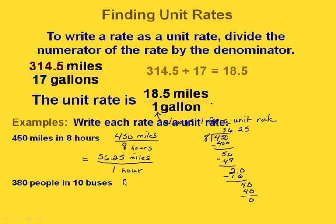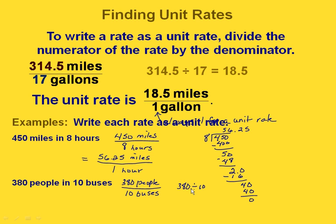For 380 people in 10 buses, we divide 380 by 10. Using the rule for dividing by powers of 10, we have one zero, so we move the decimal point one place, giving us 38. The unit rate is 38 people per one bus.